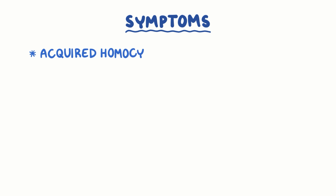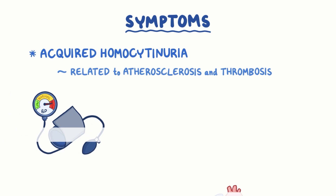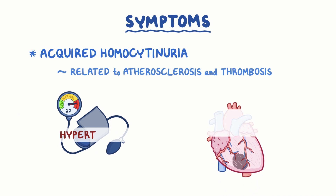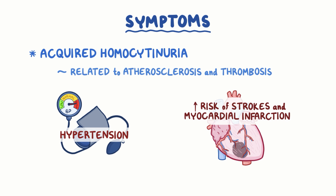Symptoms of acquired homocysteinuria are related to atherosclerosis and thrombosis since they don't affect the development of the individual. These include hypertension and increased risk of strokes and myocardial infarctions.